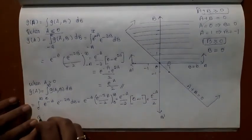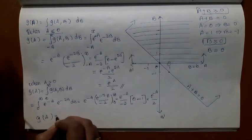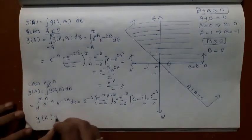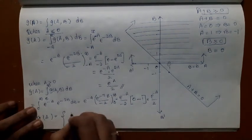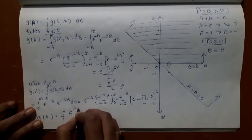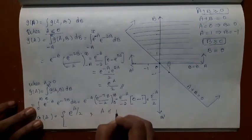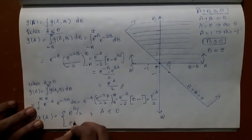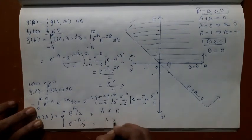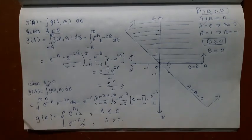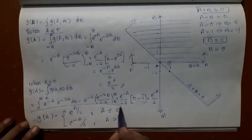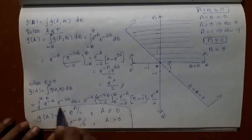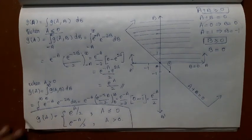To summarize: G(a) = e^a / 2 when A ≤ 0, and G(a) = e^(−a) / 2 when A > 0. This is how you find the distribution of the difference of two random variables using the concept of transformation of random variables.